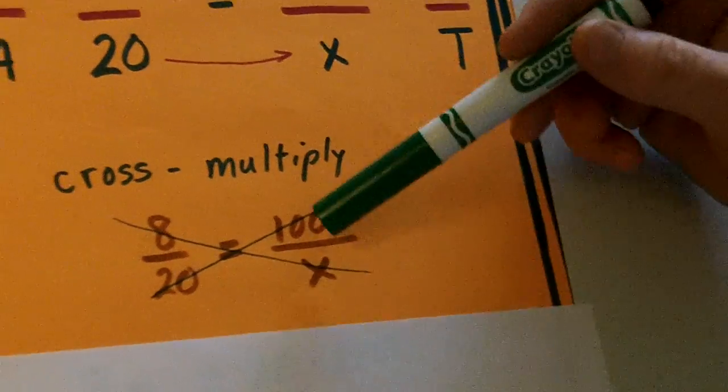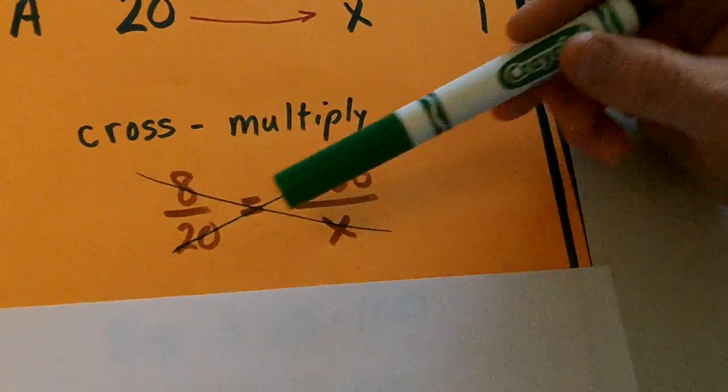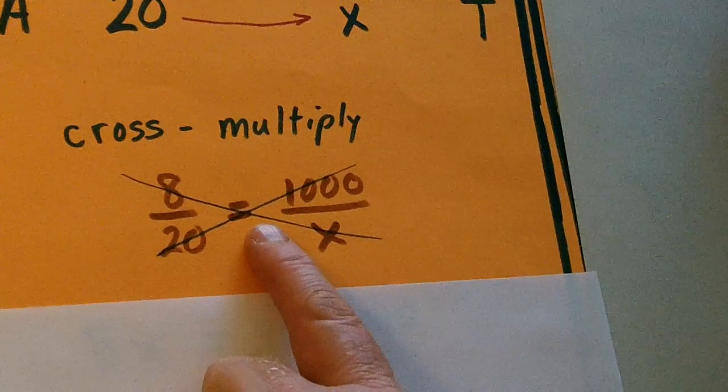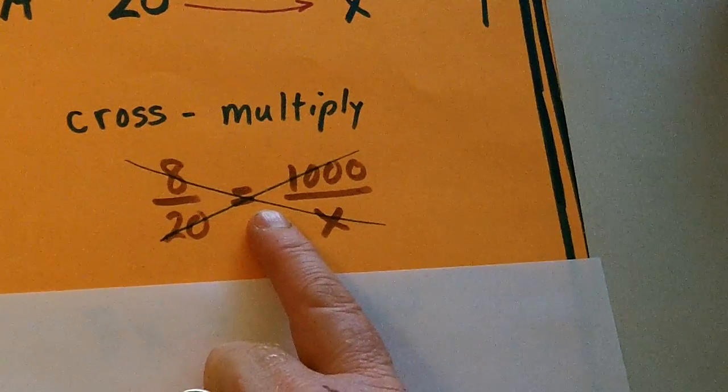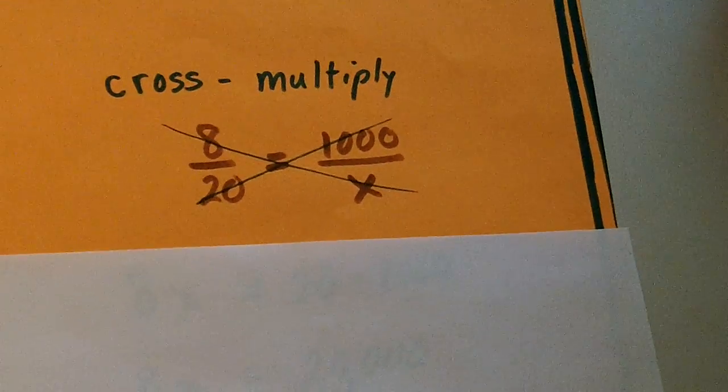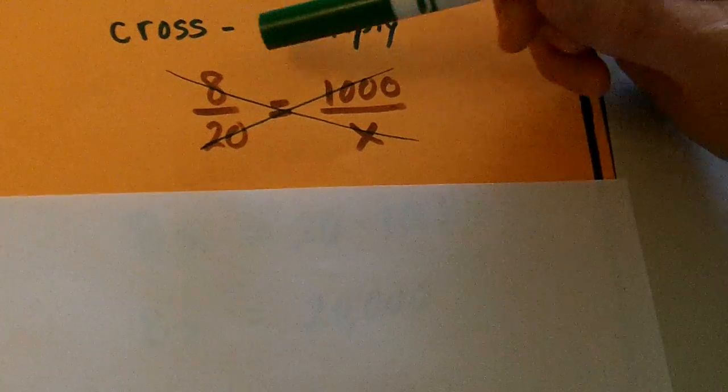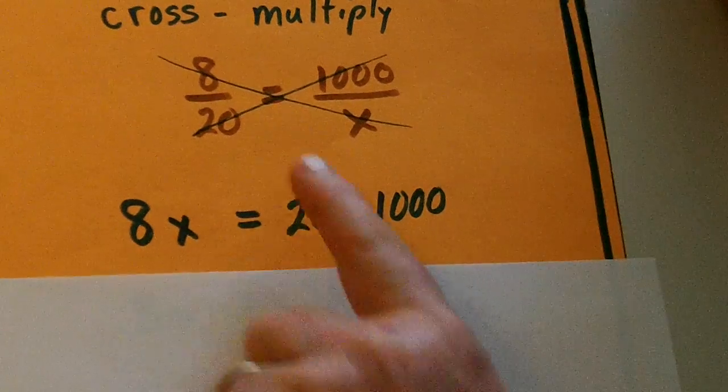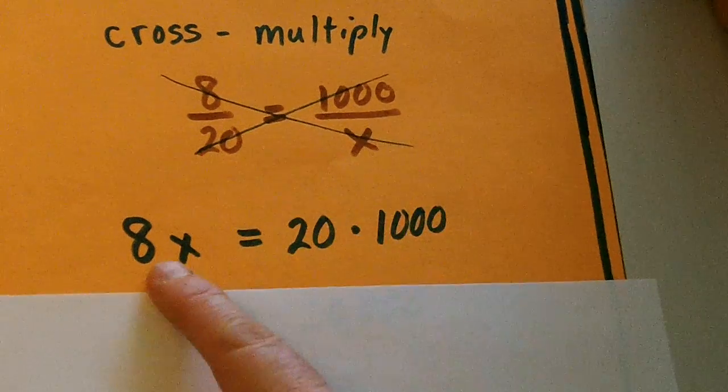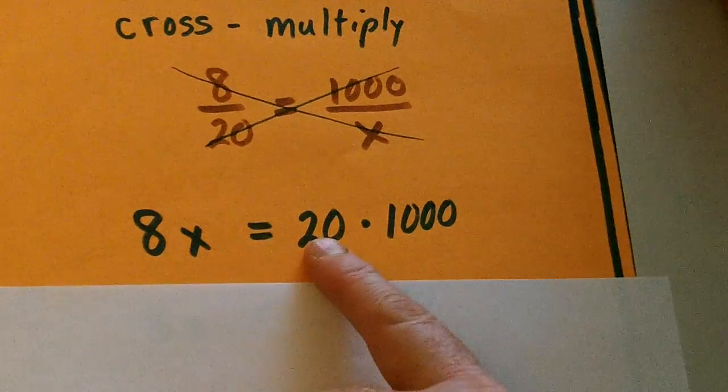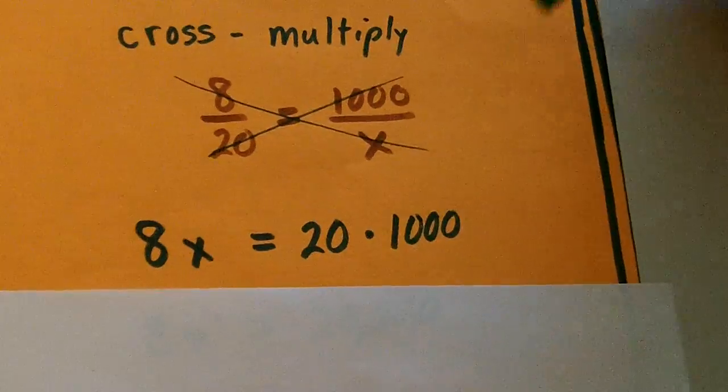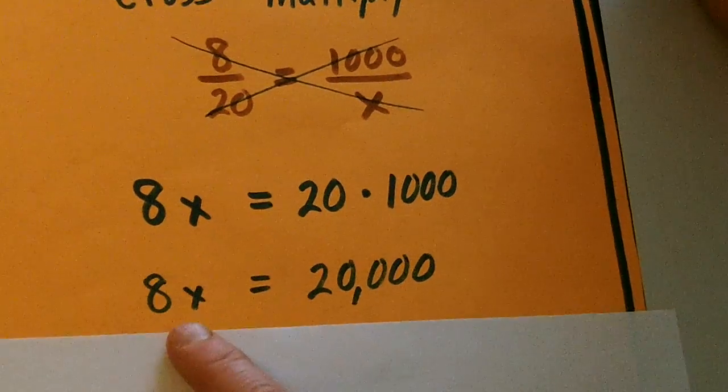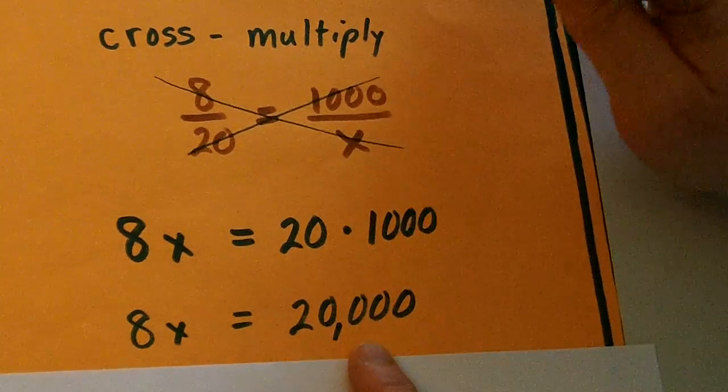Where we cross multiply here. It's a little trick that we can do only when we have two fractions and an equal sign there with a proportion problem. This is not cross cancel. This is cross multiply. So, we're going to get eight times x is equal to 20 times 1,000, which is 8x equals 20,000.